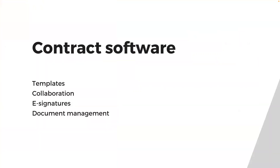Software can help streamline the process of creating business contracts and ensure that the contracts are accurate, up-to-date, and legally sound. Some ways that software can help include templates — many software programs provide pre-built templates for commonly used contracts, such as employment agreements or non-disclosure agreements, which can save time and ensure that contracts are legally sound.